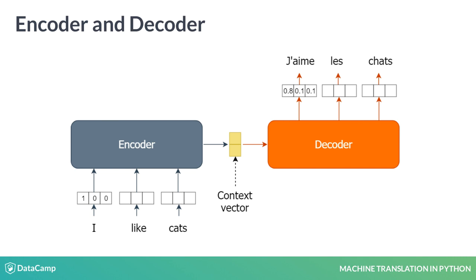Note that though the inputs to the encoder are ones and zeros, the decoder produces continuous probabilistic outputs. These models are also called sequence-to-sequence models because they map a sequence — that is, an English sentence — to another sequence — that is, a French sentence.